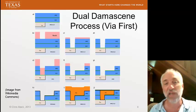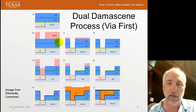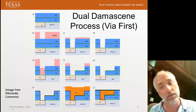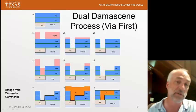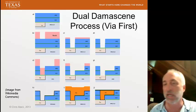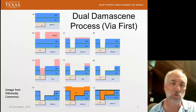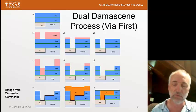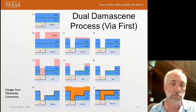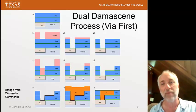This example is the via first process, where I etch the vias first, then etch the trenches second. There's also a trench first process, a variation where I first etch the trenches out, then etch the vias. The via first is the more popular of the two, but there are other variations as well. That is the basis of the dual damascene process.